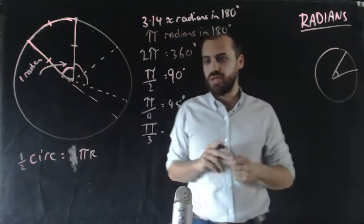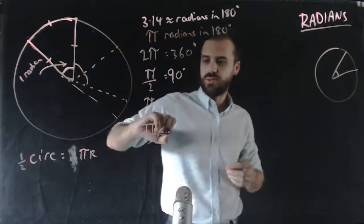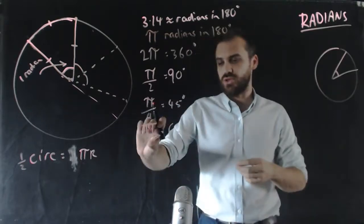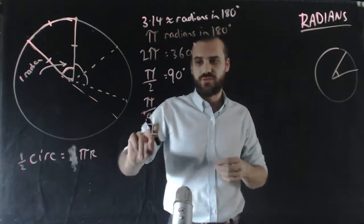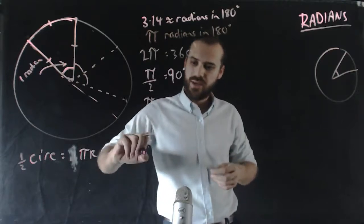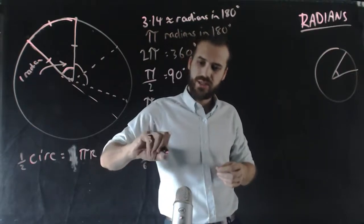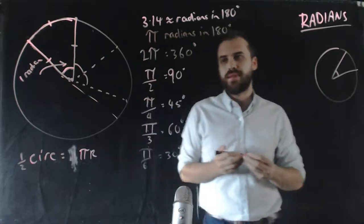Pi on 3 radians is equal to 60 degrees. That's a third of a straight line. A straight line divided by 3 is 60 degrees. Pi on 6 is equal to 30 degrees.